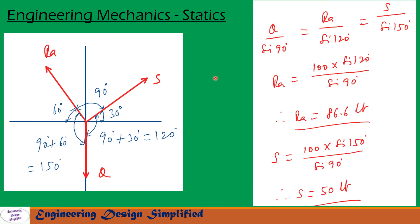Now let us apply Lamy's theorem for the first roller. Lamy's theorem gives: Q / sin 90 = RA / sin 120 = S / sin 150. From the first and second terms, we get RA equal to 100 × sin 120 / sin 90, so RA equals 86.6 lb. From the first and last terms, we get S equal to 100 × sin 150 / sin 90, so S equals 50 lb.